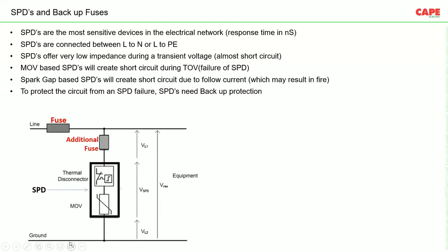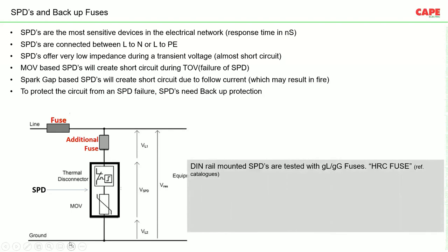Once the SPD reaches end of life, we must ensure it disconnects from the circuit. For this purpose, we use an additional fuse called backup protection. Generally, DIN-rail monitored SPDs are tested with gL/gG fuses or HRC fuses. All standards recommend gL/gG and HRC fuses only for SPDs. This backup fuse is only required when the line fuse exceeds a specified value.